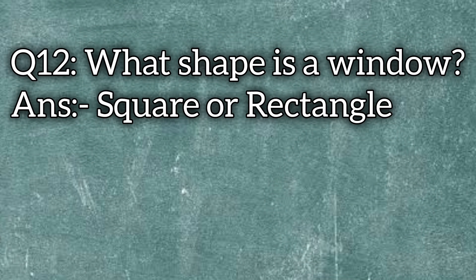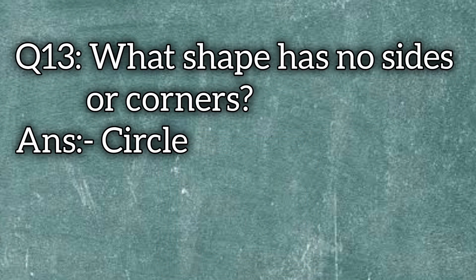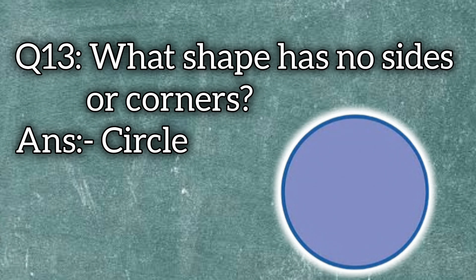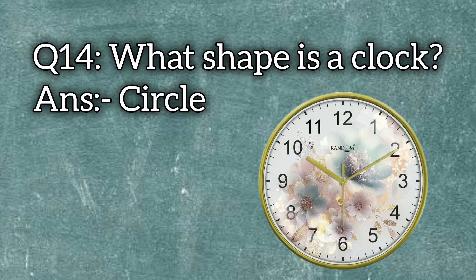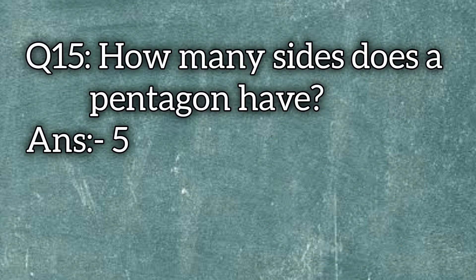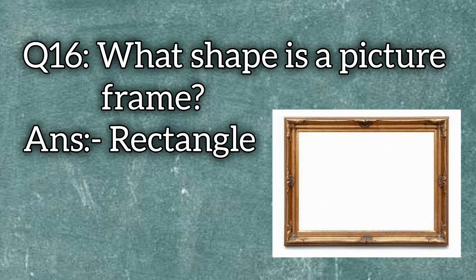What shape is a window? Square or rectangle. What shape has no sides or corners? Circle. What shape is a clock? The answer is circle. How many sides does a pentagon have? The answer is five.